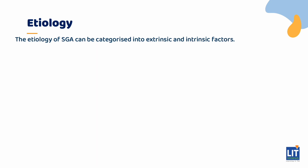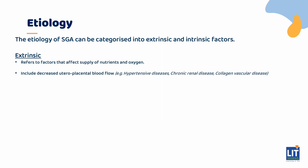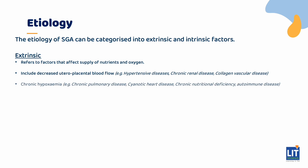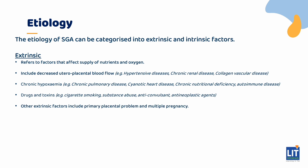At the expense of non-vital organs such as kidneys and the abdominal viscera. The etiology of SGA can be categorized into extrinsic and intrinsic factors. Extrinsic factors refer to factors that affect supply of nutrients and oxygen. These include decreased utero-placental blood flow such as hypertensive diseases, chronic renal disease and collagen vascular disease, chronic hypoxemia such as chronic pulmonary disease and cyanotic heart disease, chronic nutritional deficiency, autoimmune disease, drugs and toxins such as cigarette smoking, substance abuse, anti-convulsants, and anti-neoplastic agents. Other extrinsic factors include primary placental problems and multiple pregnancy.